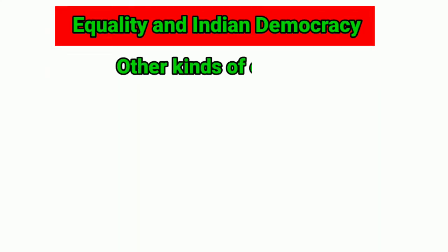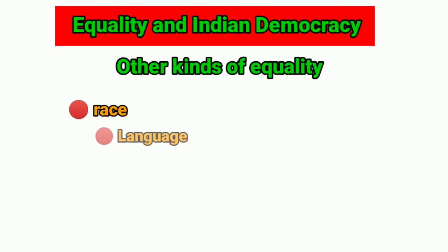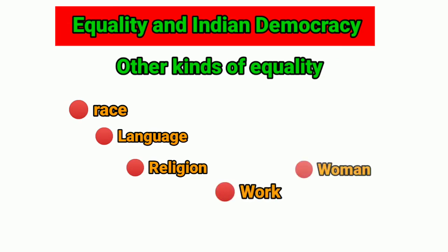Other Kinds of Equality: In India, all citizens formally enjoy the same status. Hence, no citizen can be looked down upon for belonging to a certain race, speaking a certain language, following a certain religion, doing a certain type of work, being a woman, being poor, or suffering from a disability. India's constitution guarantees the right to equality to all citizens of the country.